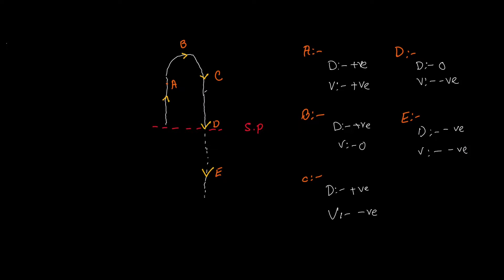Now the object makes a turn and moves back towards the starting point. At point F, the object is moving upward. Displacement is still negative because the object is still placed behind or below the starting point. But velocity is now positive because the object is moving forward or upward. That covers the different scenarios for this kind of situation.